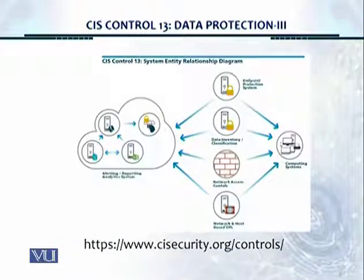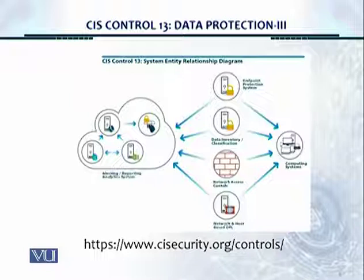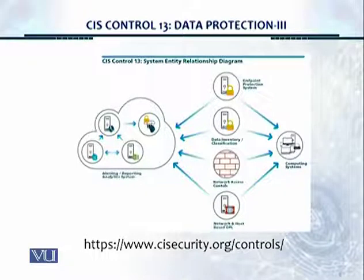This is the system entity relationship diagram. As you can see, there's an alerting, reporting, and analytics system. On the left we have computing systems, and we're using various mechanisms like data loss prevention solutions or data inventory classification systems in order to protect the data.